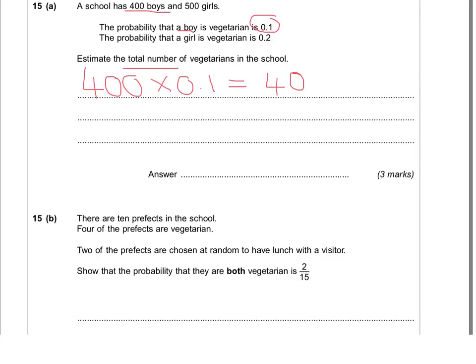And if you think about the logic in that, the 0.1 is the same as a tenth. So a tenth of the boys, a tenth of 400 boys. If we do the same now for the girls, so there's 0.2 on the girls and there's 500 of them, so 500 times by 0.2 gives us 100.